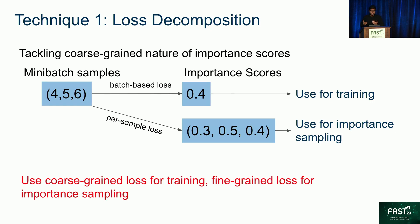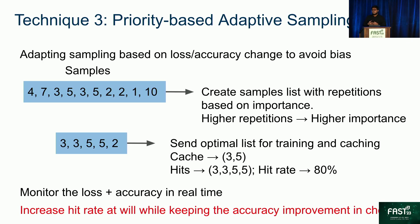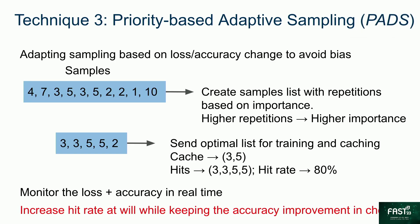Shade uses the per-sample loss for important sampling and the batch-based loss for training. To adapt the importance scores for priority-based caching, Shade ranks the importance scores. So when samples 5 and 8 are the most important in mini-batches B1 and B2, after ranking them, both 5 and 8 would end up at the top of the queue. To make the model unbiased, it adapts the sampling based on the loss and accuracy change. It creates a sample list with repetitions — where higher repetitions mean higher importance — and then sends this optimal list for training and caching, increasing the hit rate while keeping accuracy improvement in check.